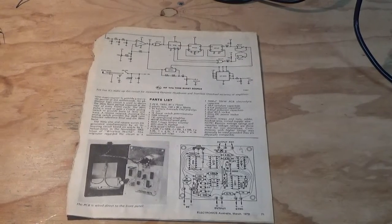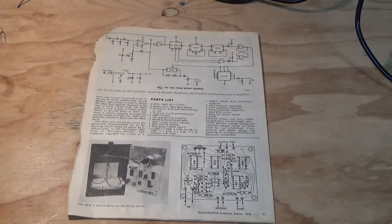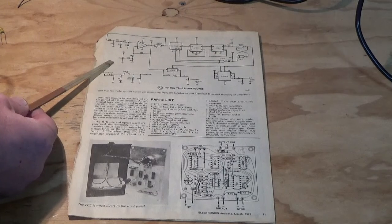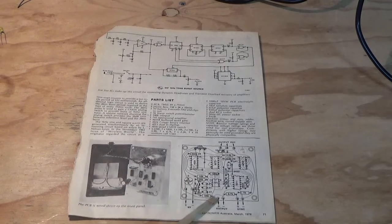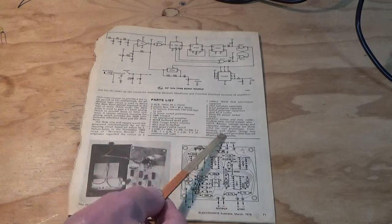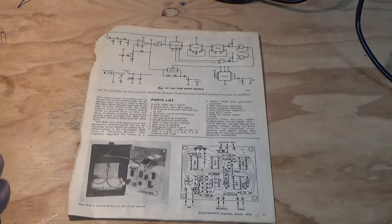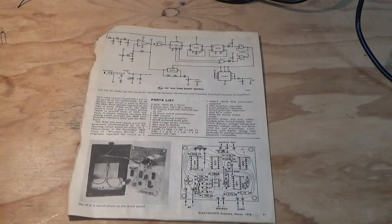Now as with any project, it's important to read through the project information and run through your schematic of the circuit, your general layouts as depicted here, but also go through your parts list and check that off, making sure that you've got the components and with these older type projects that the parts or components are still available.